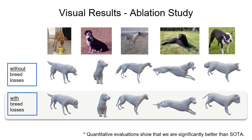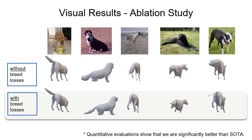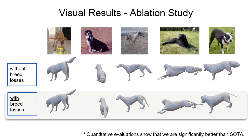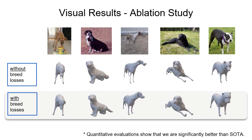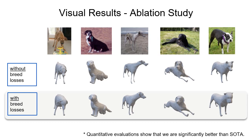Here we show some visual results. Compare the top row, which shows results when not using breed losses, with the bottom row where you can see results for the full Bark model. Adding our breed losses leads to significant improvement in 3D shape.